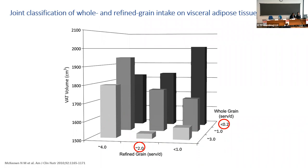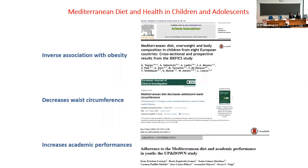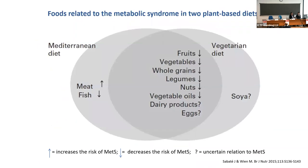The lowest visceral fat accumulation was found in subjects consuming at least two refined grain servings and at least three whole grain servings per day — roughly in line with recommendations for the general population. Therefore, eating carbohydrates is not per se associated with the worst outcome.